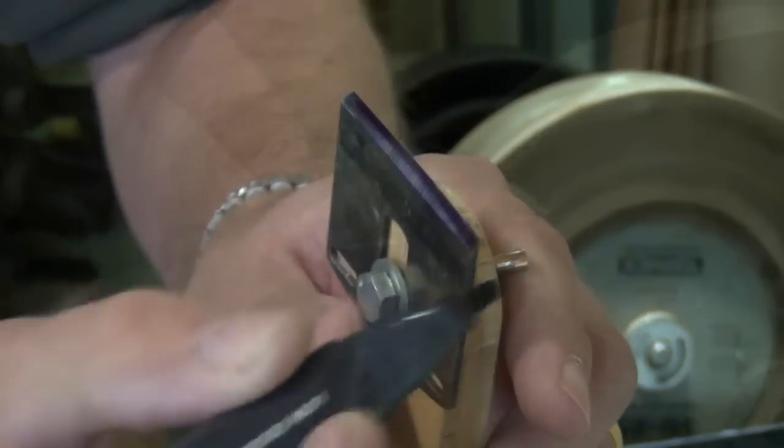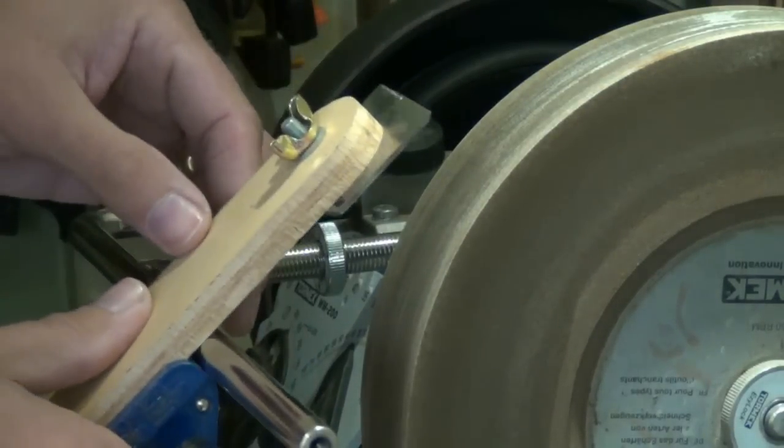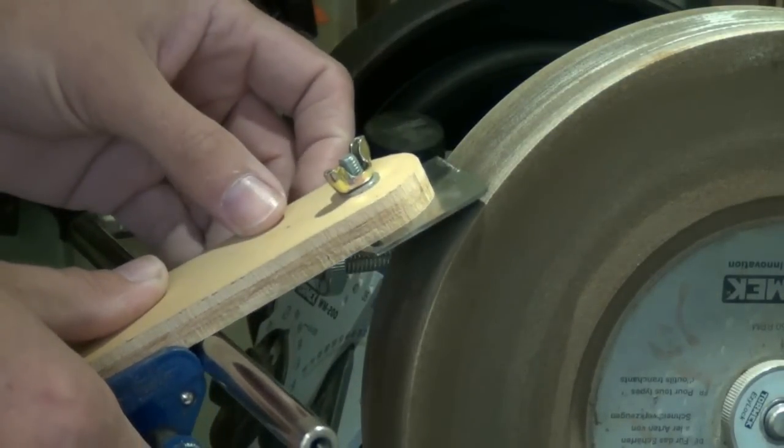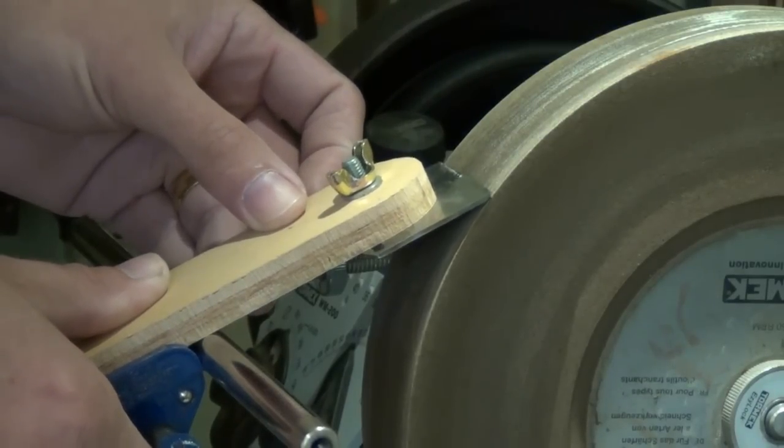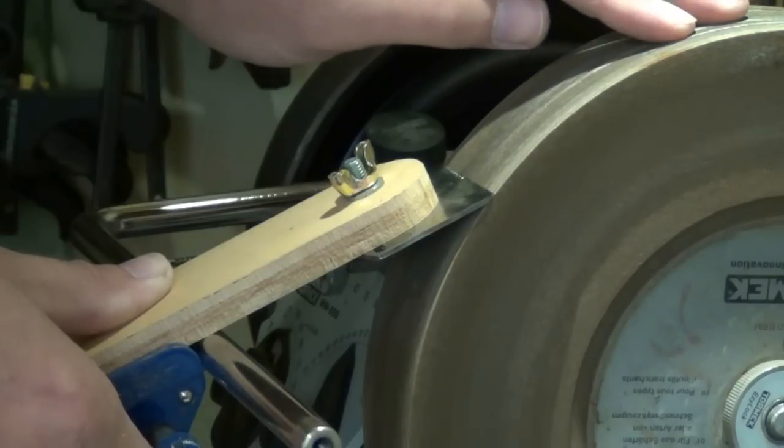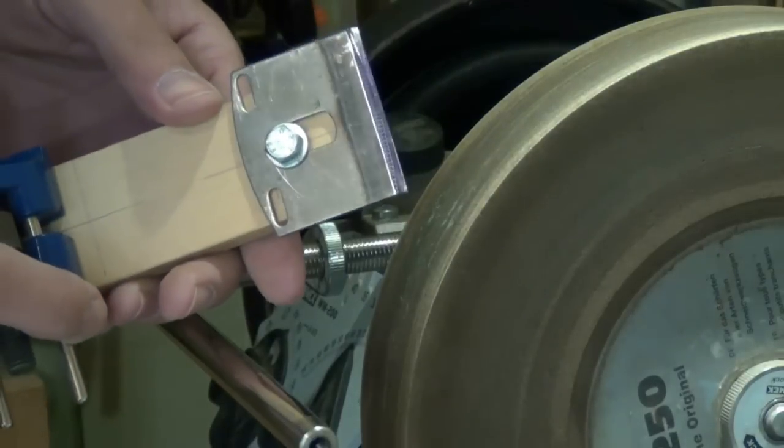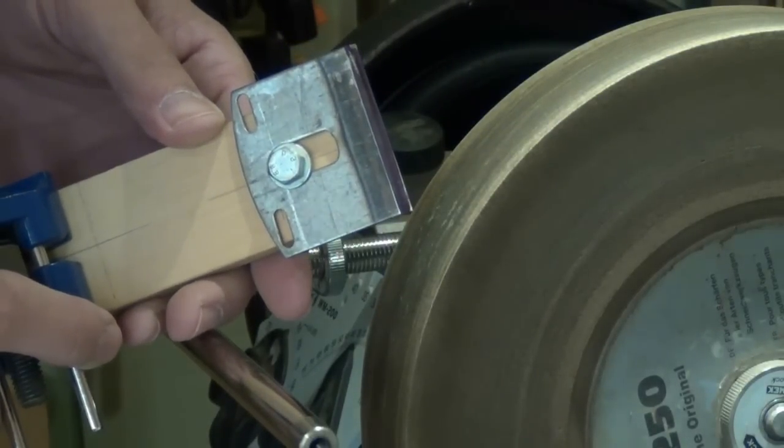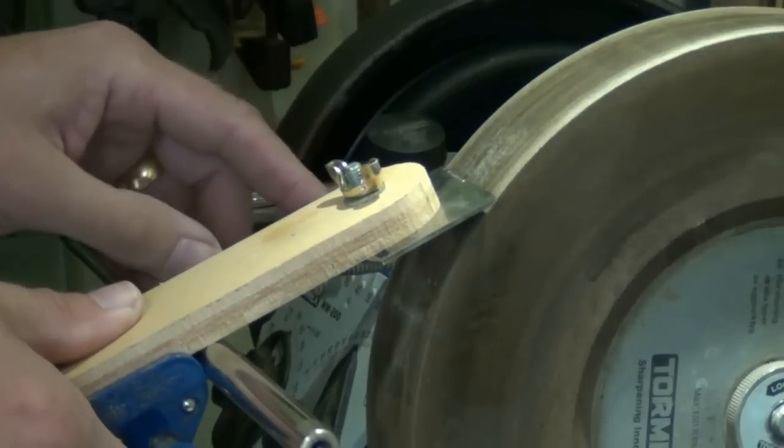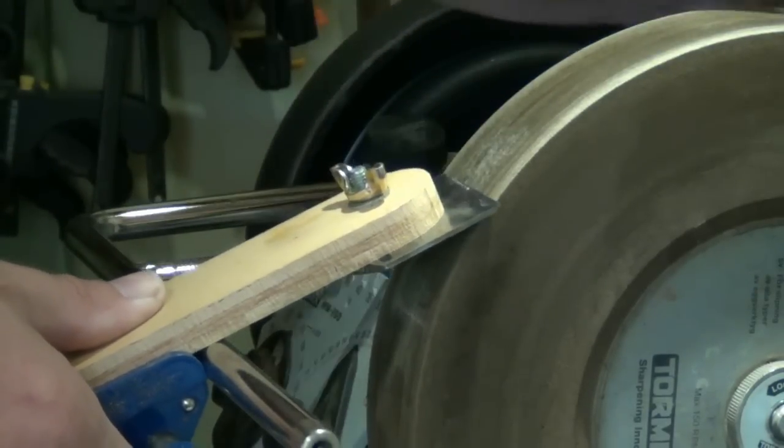Back at the grinder, I set my reference bar so that the bevel looks as though it's going to run flat on the stone. Lower it onto the stone and then manually just rotate the stone a bit. Look at the permanent marker and see where it's being worn away. By adjusting the reference bar, we can align the bevel up with the face of the stone.